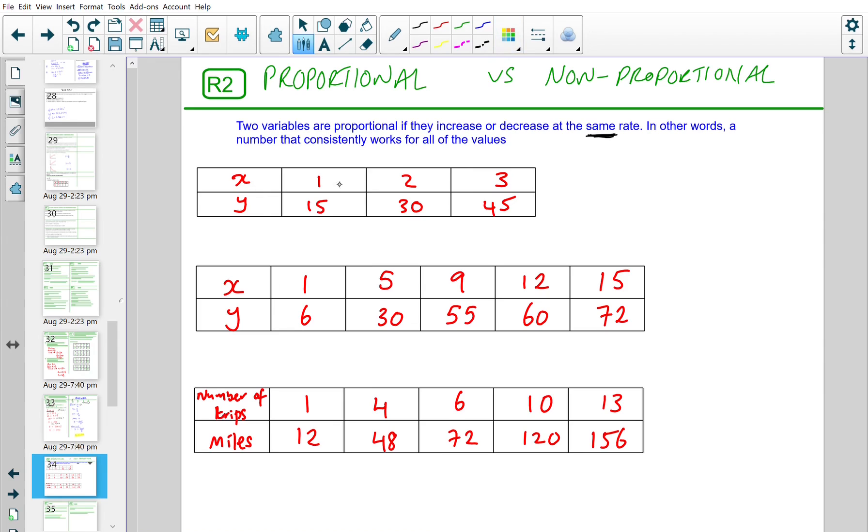So, let's look at three examples and decide whether they are proportional or not. So, x values here and y values. How do I get from 1 to 15? What could I multiply? Multiply by 15. Now, let's decide for the second set of values if we multiply by 15 or not. How do I get from 2 to 30? Yeah, multiply by 15 again. So, so far, so good. Let's look at the last one. How do I get from 3 to 45? Yeah, multiply by 15 again. So, this is proportional.